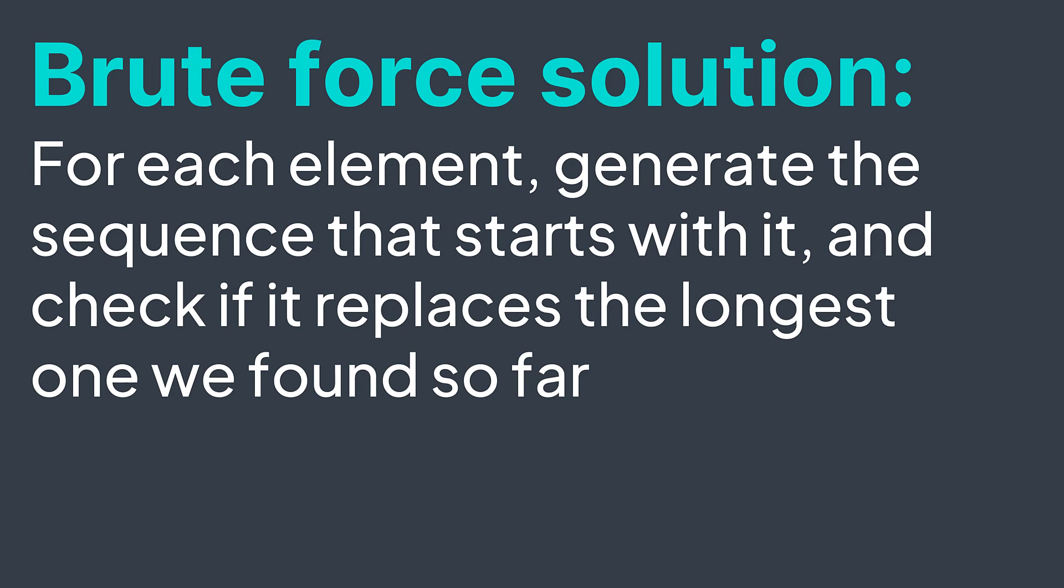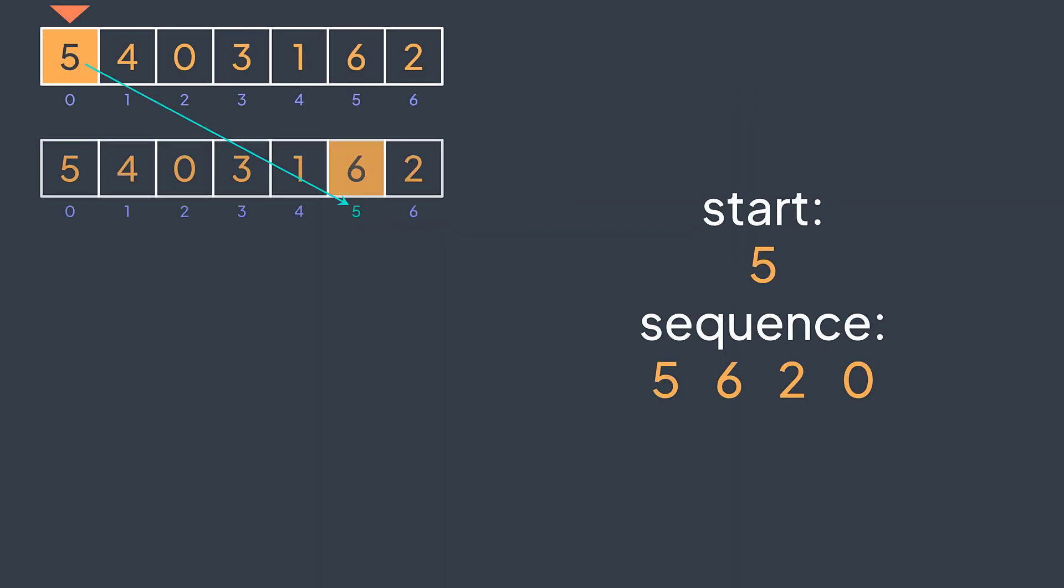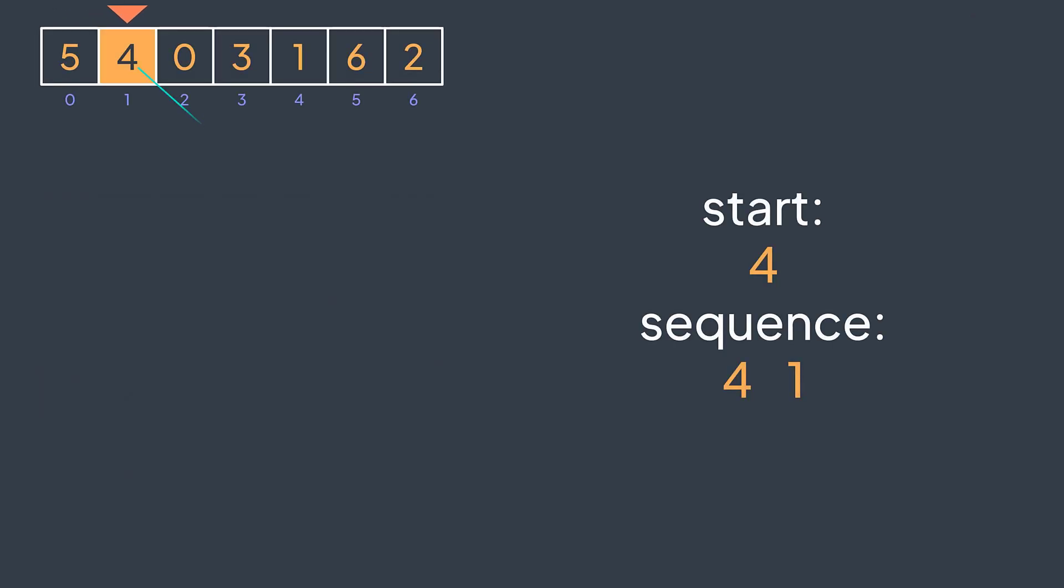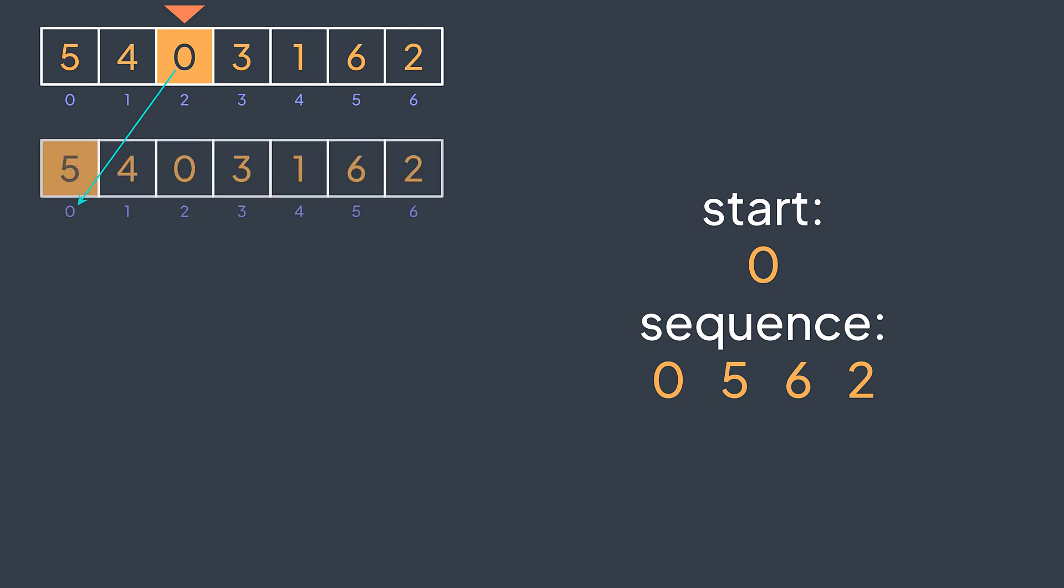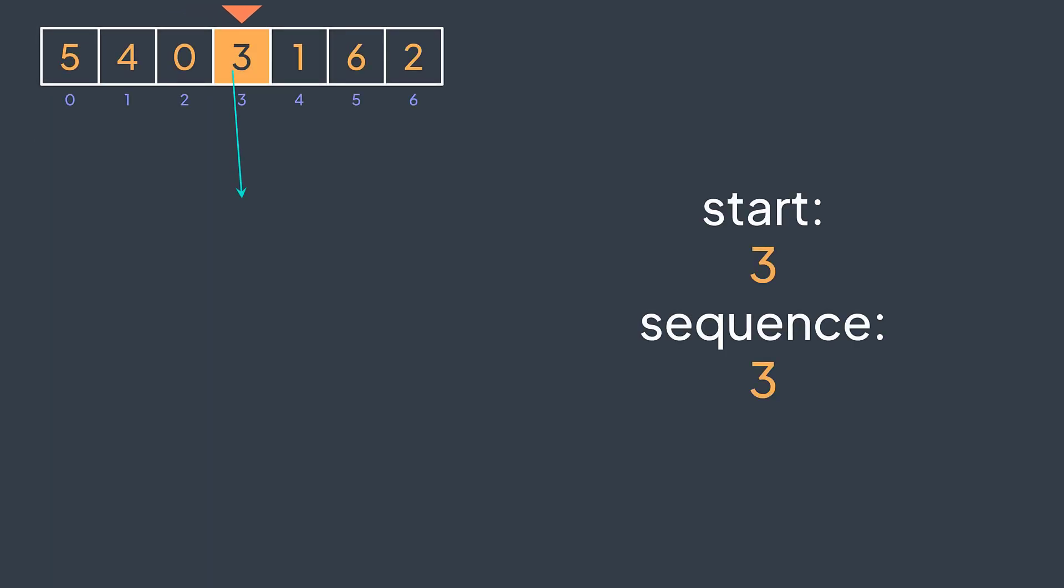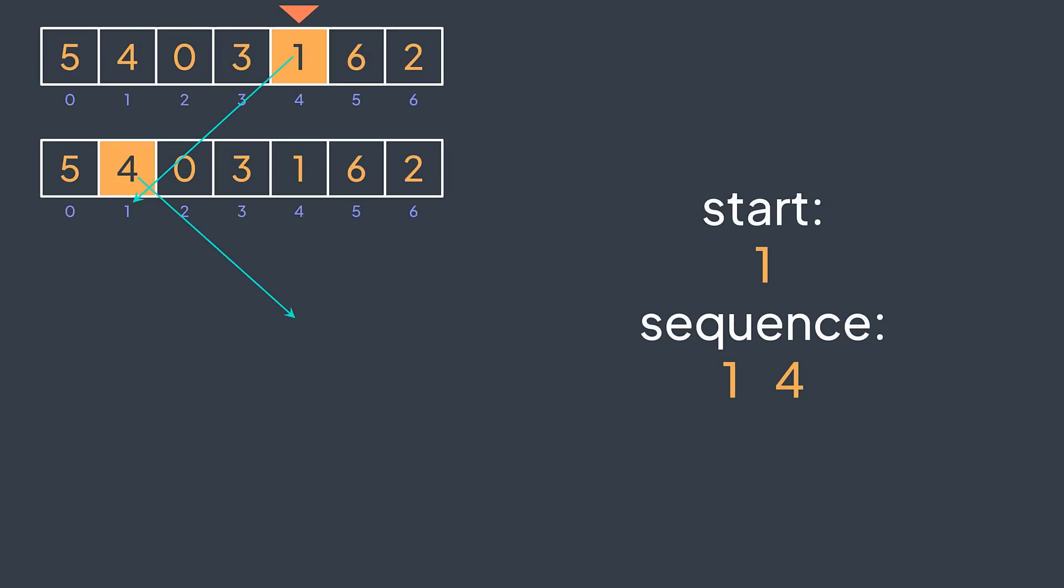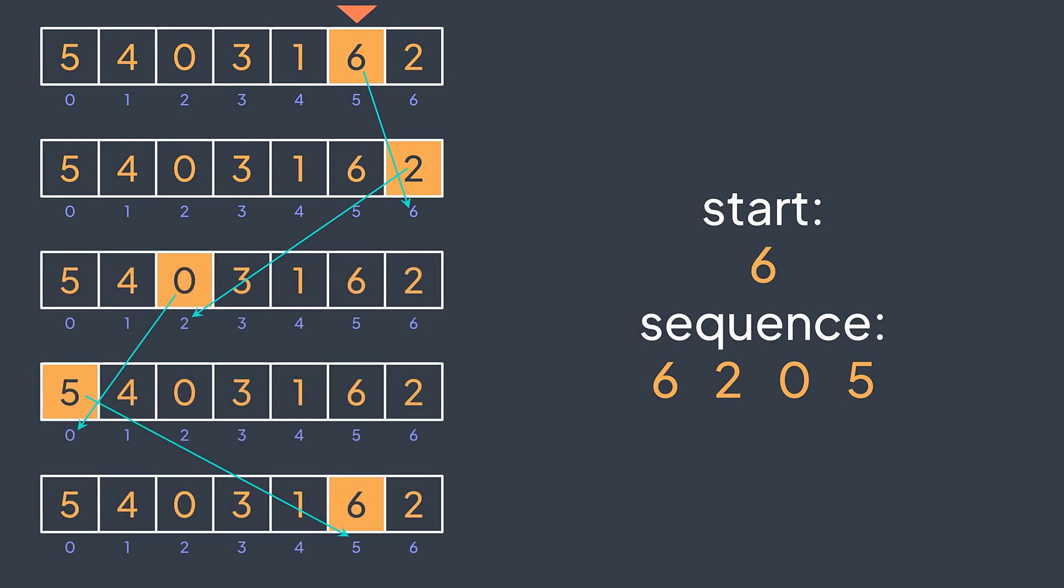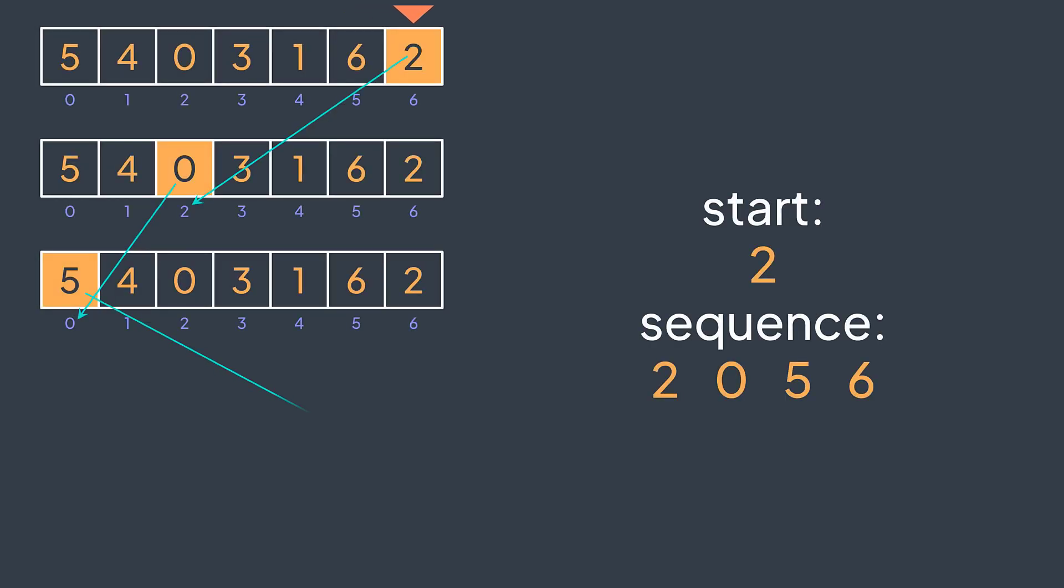When we start from the first element, we have 5620. When we start from the second one, we have 41 and it goes back to four. Third element, we'll have 0562. Fourth element, it goes to itself. So we have three only. Fifth element, we have 146. Sixth element, we have 6205. And last element, we have 2056. The longest one has a length of four, return four.